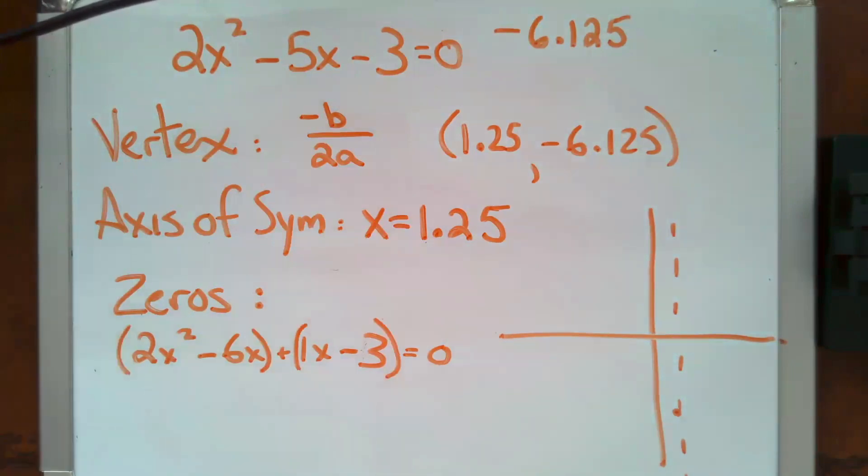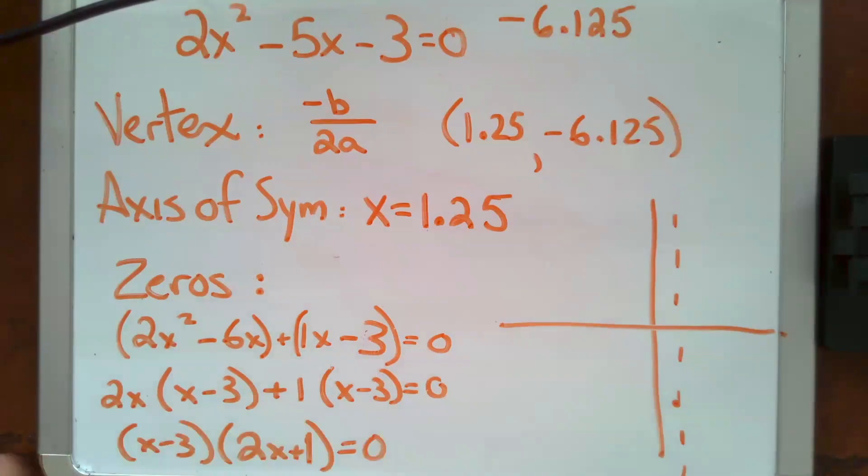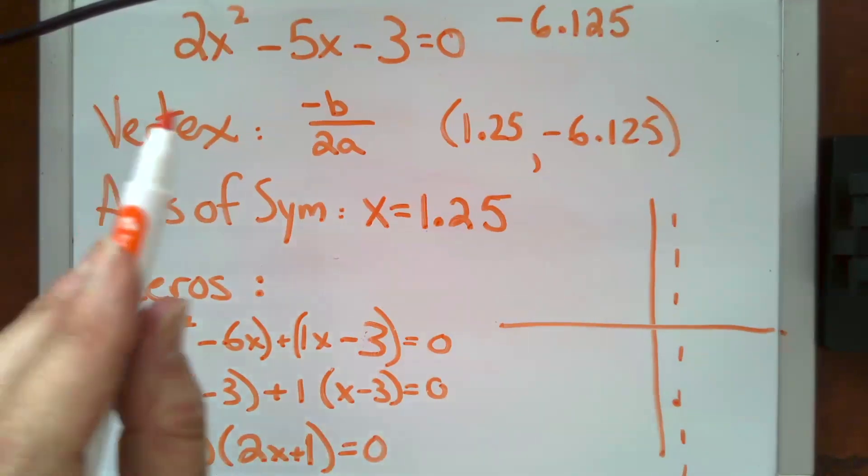And the biggest thing I can factor out of both of these two terms is a 2x. And the biggest thing I can factor out of these terms is just a 1. And I see that what's in my parentheses is the same. So I will now factor that out of both terms. And now I have fully factored my original equation, and I'm ready to name those zeros by setting this equal to 0.